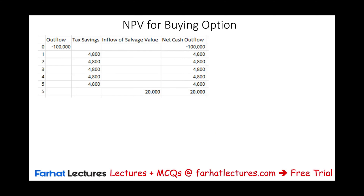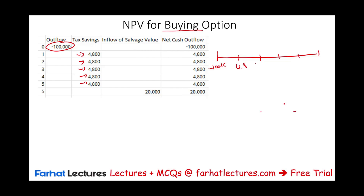Now let's take a look at the full picture for the buying option. We're going to have a cash outflow of $100,000 today. Then every year — years 1 through 5 — we're going to have a tax saving of $4,800. This looks like an annuity. In addition, in year 5, we're going to be getting $20,000 from the salvage value. Now we have to compute the net present value of this problem.